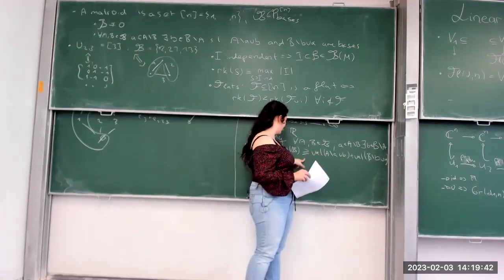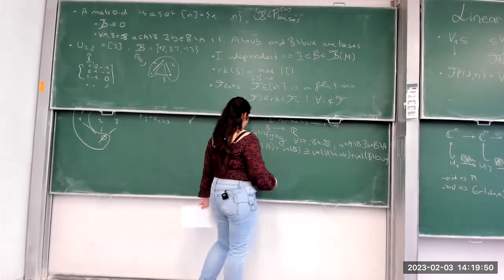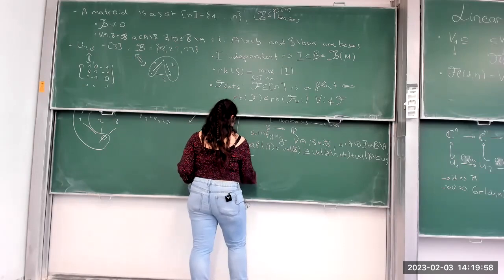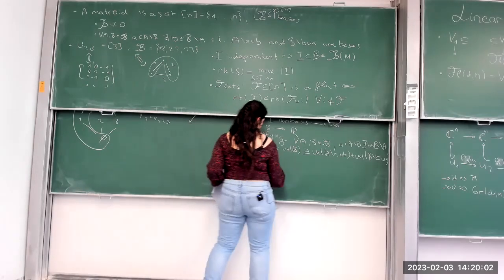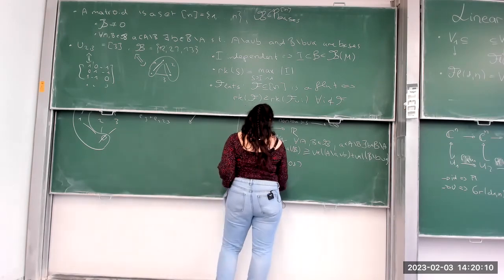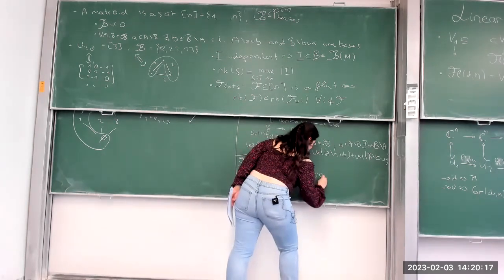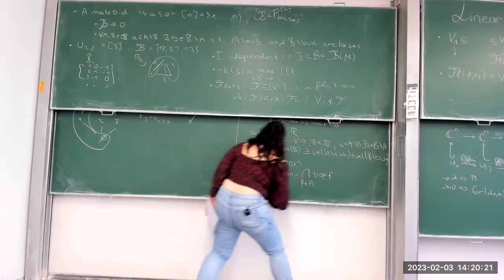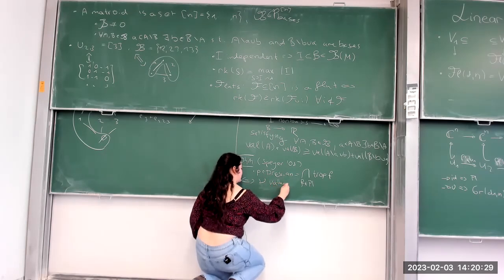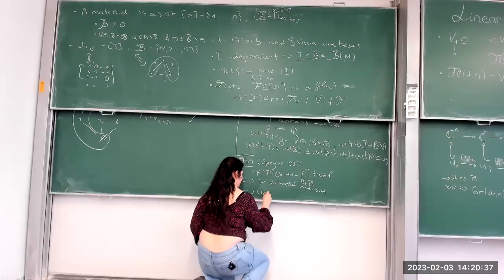If you compare this valuation condition with the Plücker relations — specifically for the Grassmannian relations where |I| equals |J| — satisfying this valuation condition is precisely the same as tropically satisfying those relations. This is actually a theorem: points in the tropical Grassmannian, which is the tropicalization of the variety defined by Plücker relations F, is equivalent to the associated matroid being a valuated matroid.